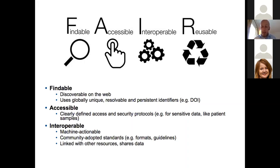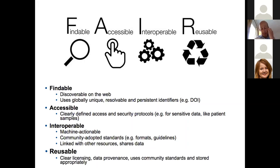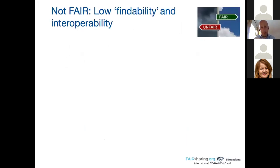Data should be linked with other resources, and you should reuse other people's standards — don't automatically create your own. Reusable means giving your data a license. If you don't give something a license, then even if you say it's open and anyone can use it, they need a license to actually do so. That includes provenance for the data, using community standards, and storing it appropriately — not necessarily on your own computer, but somewhere persistent. If something is not FAIR, you can't find it or interoperate with it in any way.